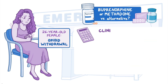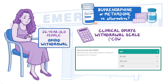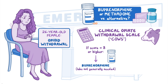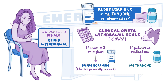You may calculate a Clinical Opiate Withdrawal Scale (COWS) in the ED. If the score is 8 or higher, buprenorphine may be administered. Labs are not generally needed prior to administering buprenorphine. However, if the patient is already on methadone, administer low-dose methadone in the ED, as buprenorphine can lead to worsening withdrawal in that setting.